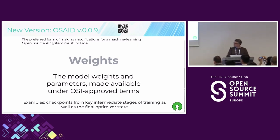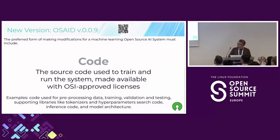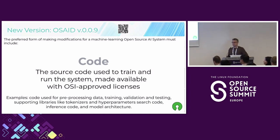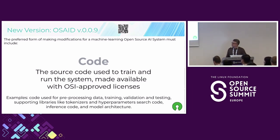There are many components inside a machine learning system. We grouped them basically into three: weights, code, and data. In the code space, what is necessary to study, modify, and use is the code for running inference — without knowing how to run inference on those weights and parameters, you can't use the system. Running inference means executing the AI — basically getting the output given an input. You need this engine for the inference. You also need supporting libraries like tokenizers and other elements that allow you to transform the input.